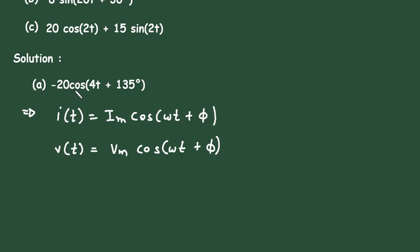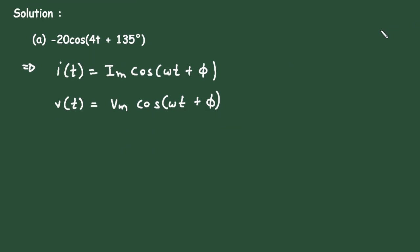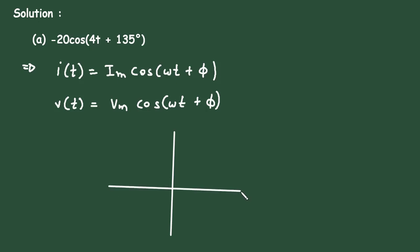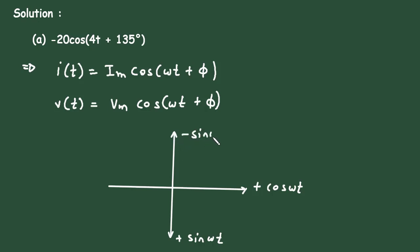Here the expression is not in standard form because it has a negative sign. So first we will convert minus cosine to plus cosine. Going back to basics: this is +cos(ωt), this is +sin(ωt), this is −sin(ωt), and this is −cos(ωt).